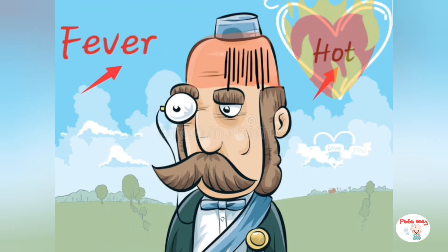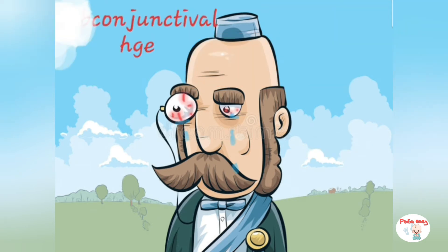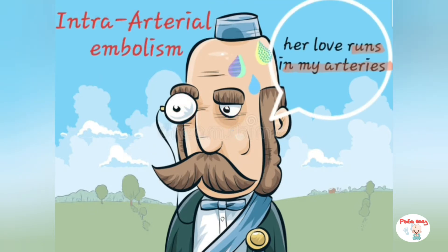The Duke started crying until his eyes turned red. The red eyes should remind us of conjunctival hemorrhage, which is one of the vascular phenomena considered as a minor criteria of Duke criteria.